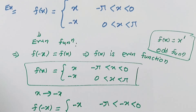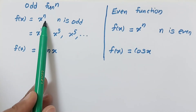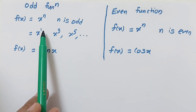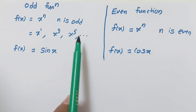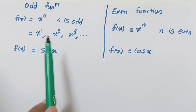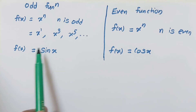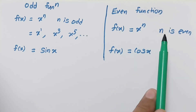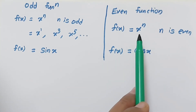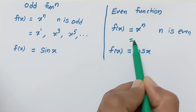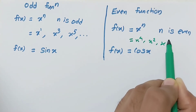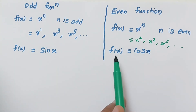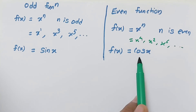Now I will tell you the short trick. For f of x equals x raised to the power n: if n is odd, it is an odd function — for example x, x cubed, x to the power 5. In trigonometry, sin x is an odd function. If n is even, it is an even function — for example x squared, x to the power 4, x to the power 6. If the power of x is even, the function is even. In trigonometry, cos x is an even function.